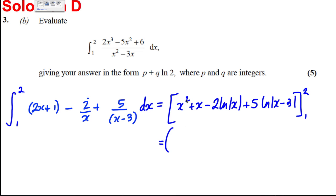Now let's put 2 in here, that would be 2², so it would be 4 + 2, -2 ln 2 + 5 ln|-1|, which is 1. And then subtract, and when you put 1 in, it would be 1 + 1 - 2 ln 1 + 5 ln of |-2|, which is modulus 2.